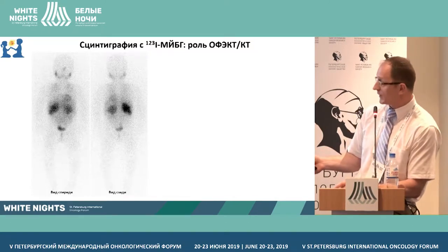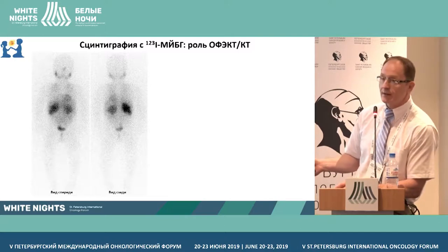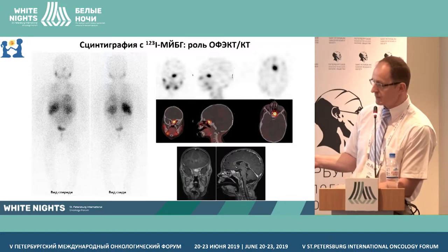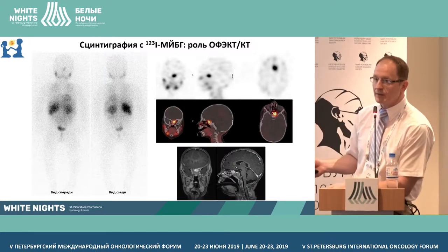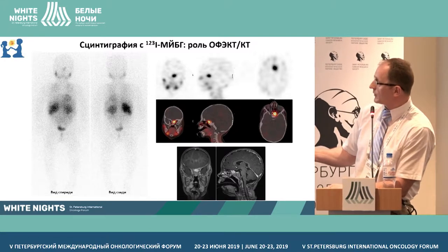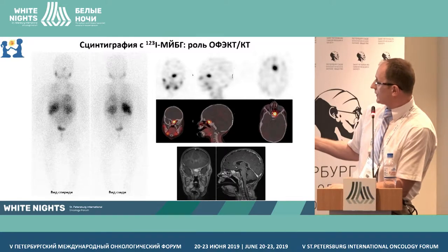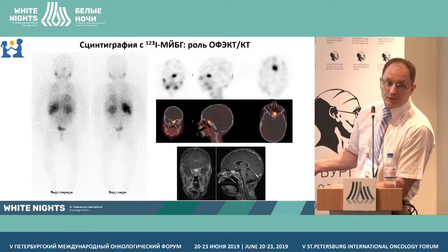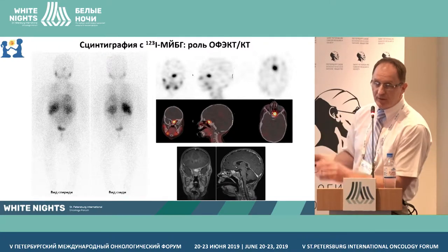We have bilateral lesions in neuroblastoma and to first view no metastasis. However, after targeted lateral projections of the head were performed, we see this uptake that is concealed on the planar image behind the uptake in the mucosa of the nose. This is SPECT/CT, and this is nothing else but a lesion of the skull bones, which we also see on MRI.